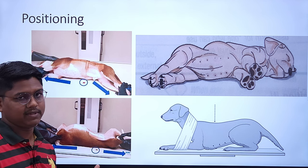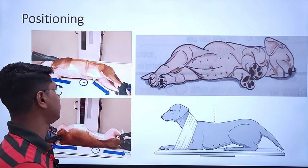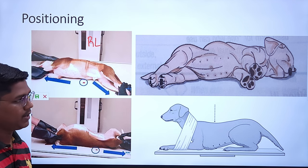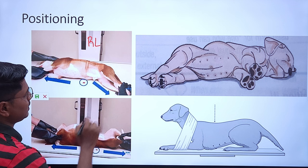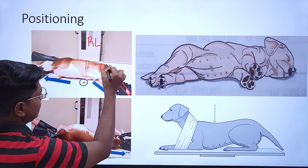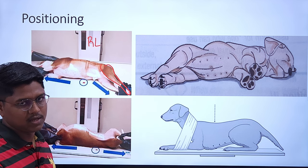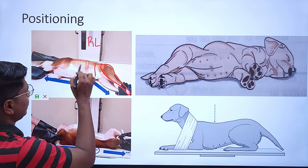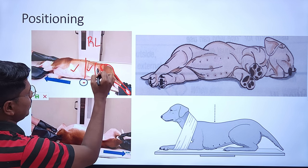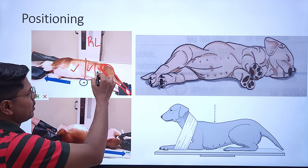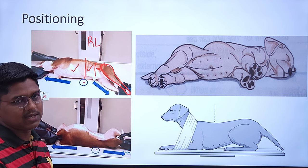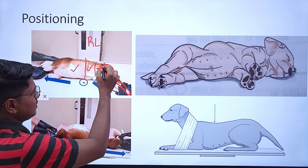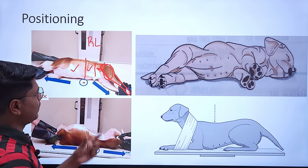Positioning is very important while taking radiographs. For the right lateral abdominal radiograph, the pelvic limb should not be pulled caudally too harshly. The abdomen can be divided into cranial, middle, and caudal portions. If the pelvic limb is pulled too hard, the serosal detail in the caudal abdomen will be disturbed. Ideally, the pelvic limb should remain perpendicular to the spine.